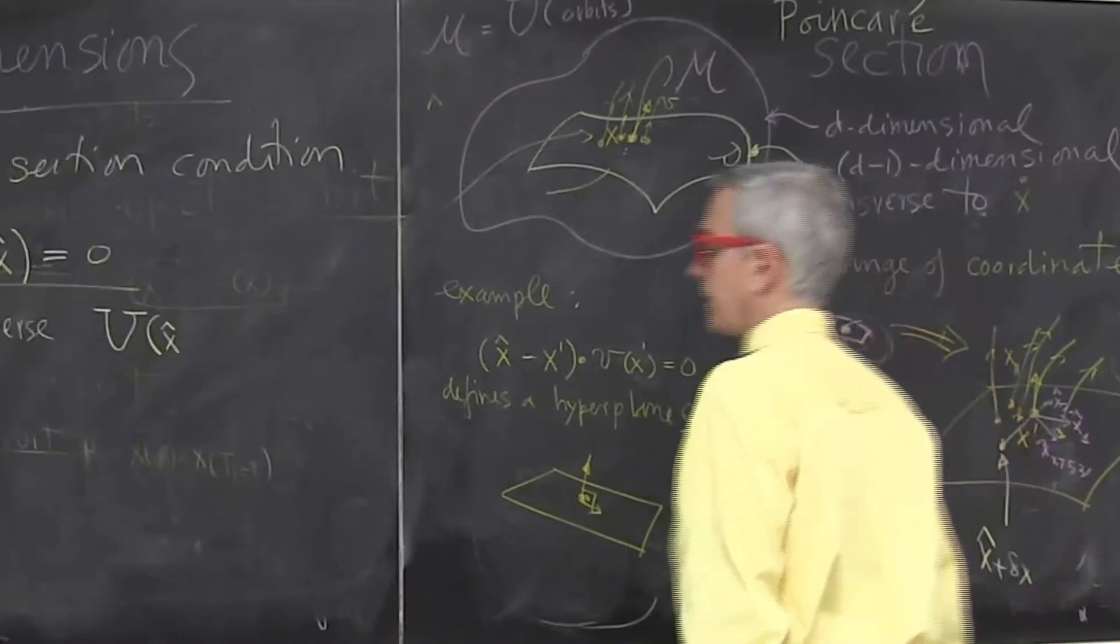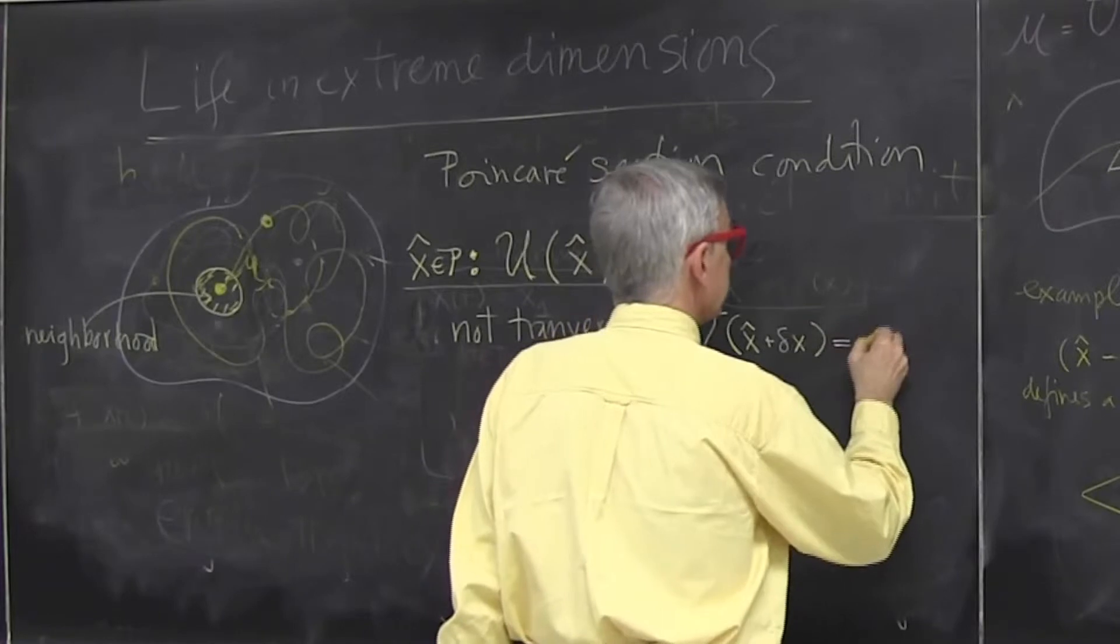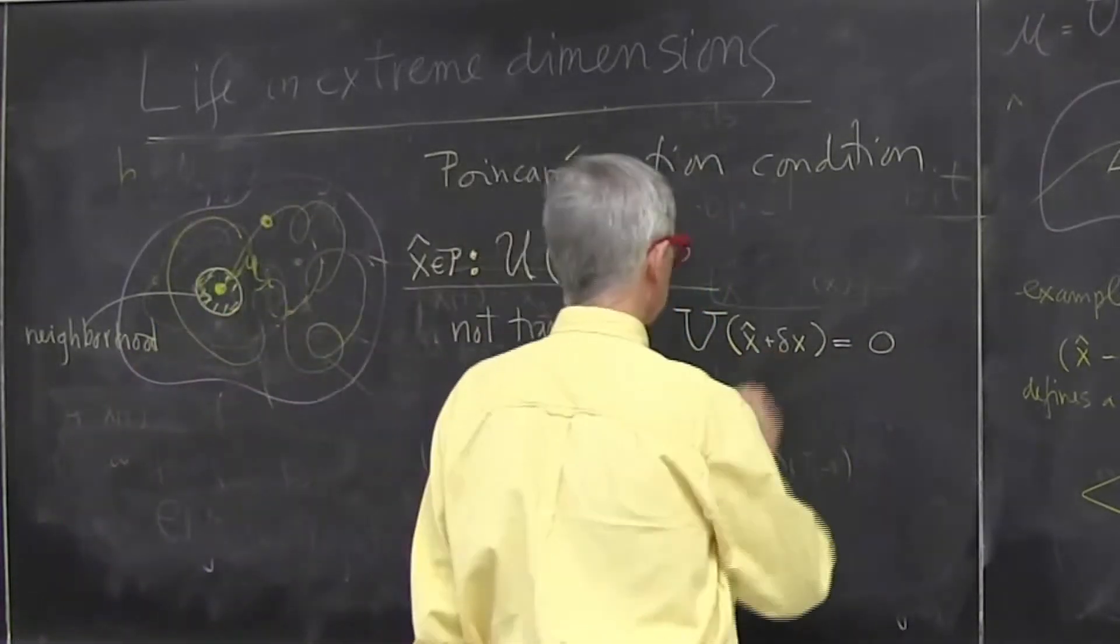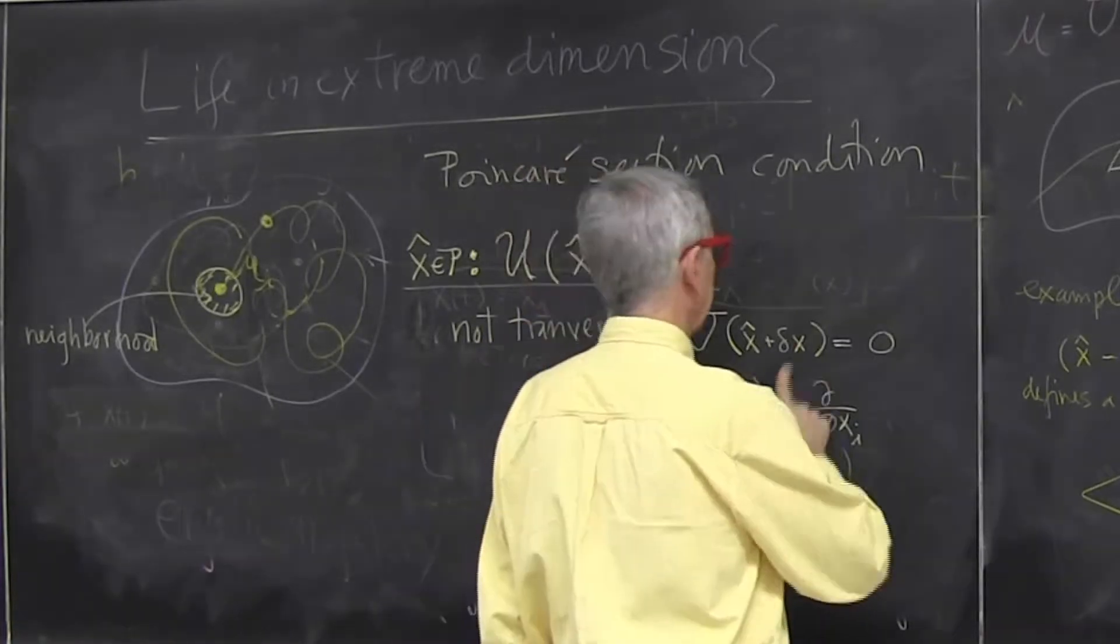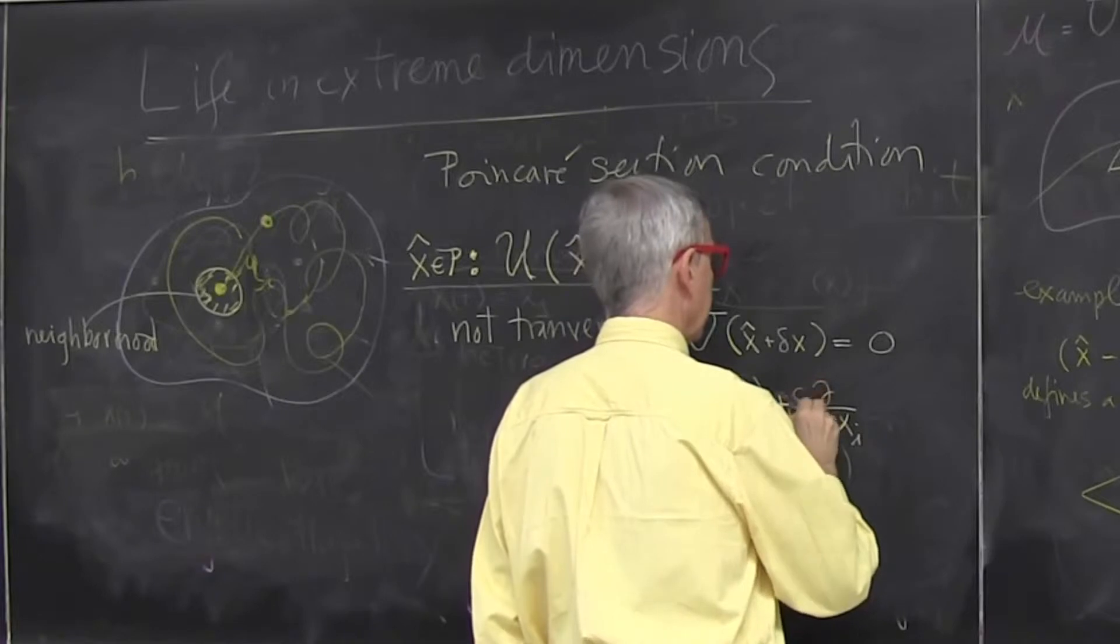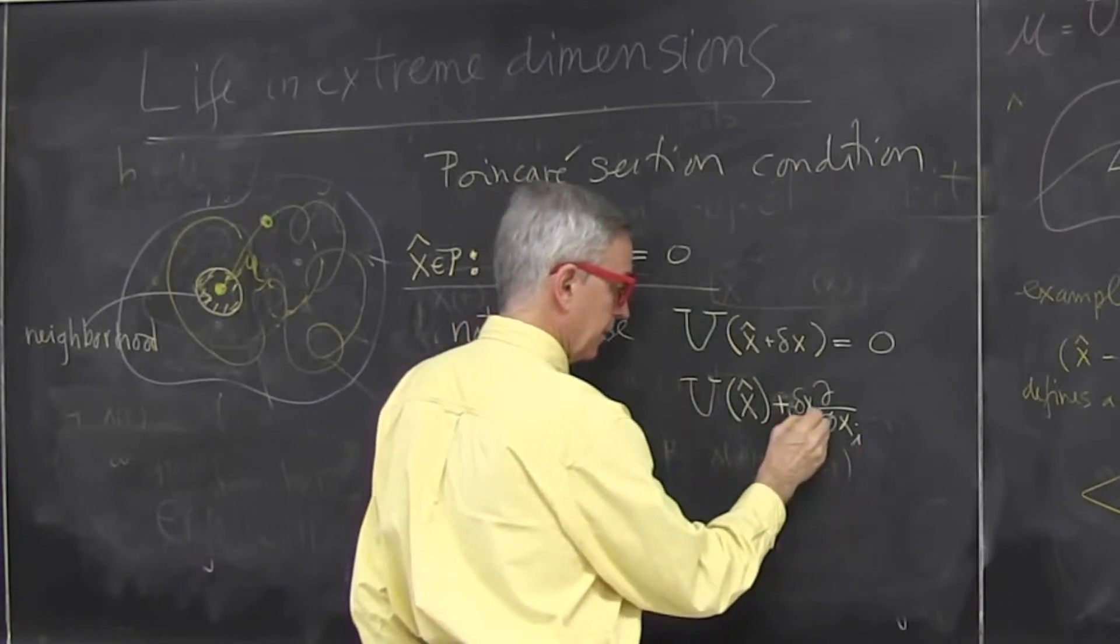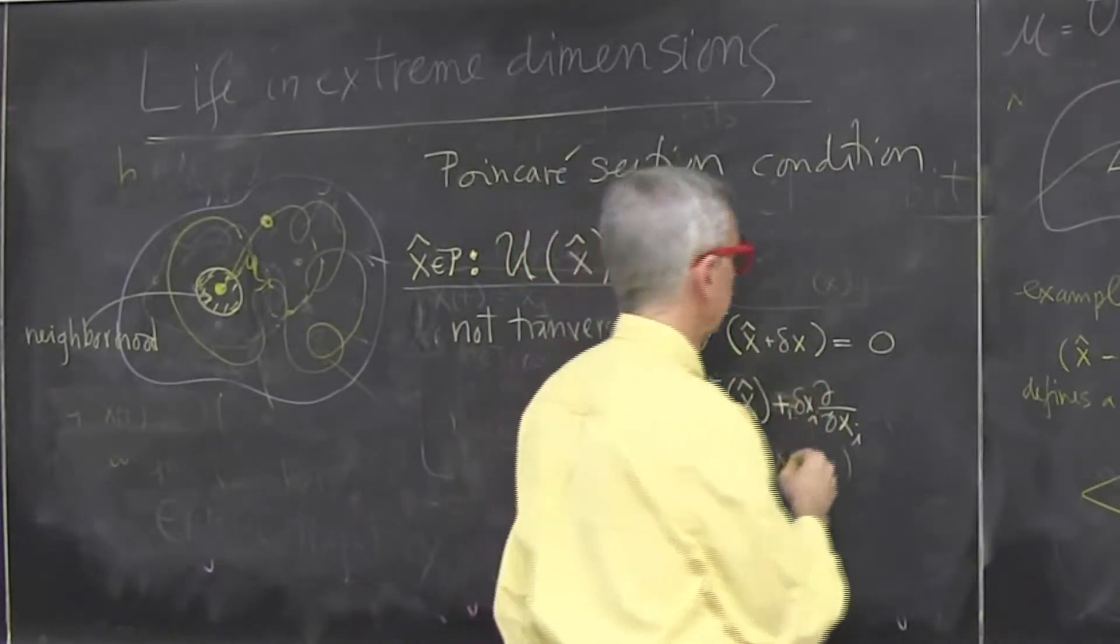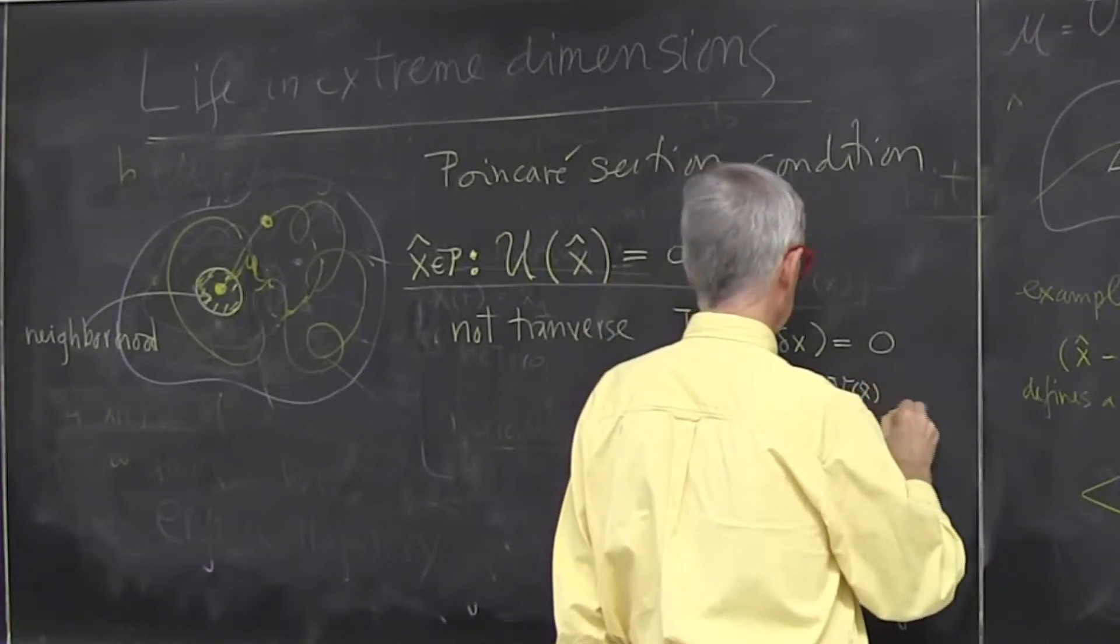And this is in the hyperplane if it satisfies the condition for Poincaré section. Now if this is small, I can write this as a Taylor series. This is a d-dimensional vector, so I write it as that. And you know, I'll be lazy instead of writing lots of sums. Often when the index is repeated,